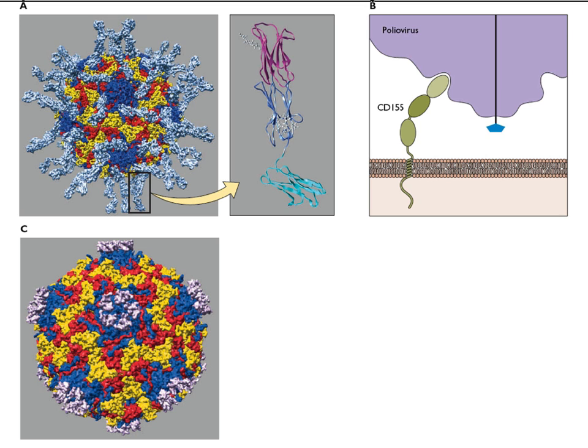Here's rhinovirus, which is a member of the same picornavirus family and also an icosahedral virus. The receptor for this kind of rhino is the low-density lipoprotein receptor. Again, a soluble form of that receptor was produced and bound to virus — and here you see it binds to a different place. It's binding up on what we call the plateau at the five-fold axis, not in the canyon. So there are lots of places where receptors can bind on these capsids — canyons or on the surface as well.